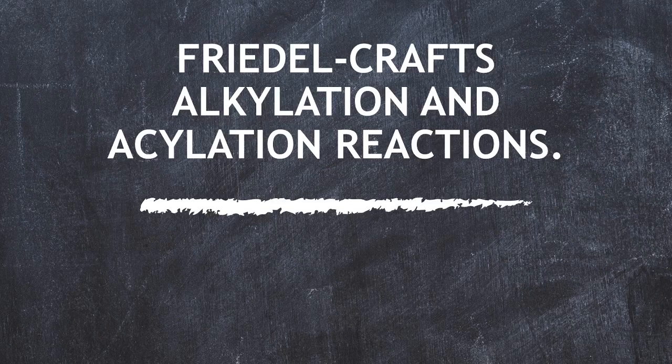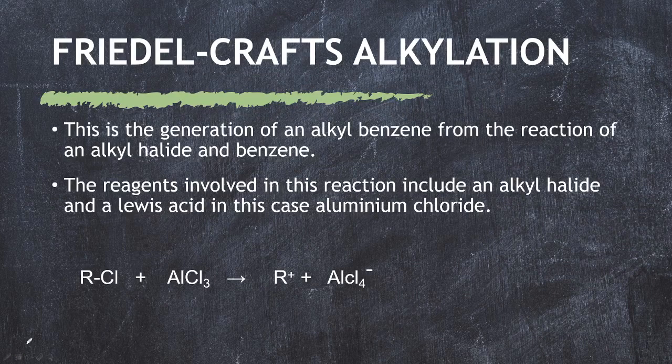In this video we're going to be talking about the Friedel-Crafts alkylation and acylation reaction. This reaction was discovered by two chemists, Friedel and Crafts, so they named it after themselves. This is the generation of an alkyl benzene. Starting with Friedel-Crafts alkylation first: this is the generation of an alkyl benzene from the reaction of alkyl halides and benzene. The reagents involved include an alkyl halide and a Lewis acid, in this case aluminium chloride (AlCl3).